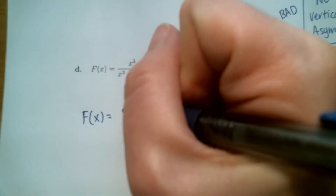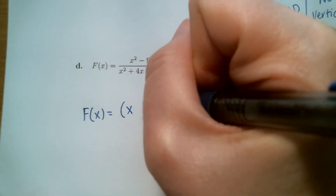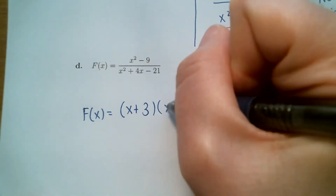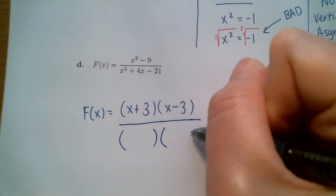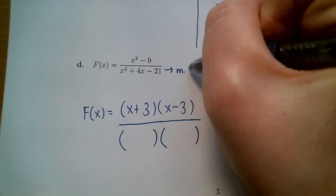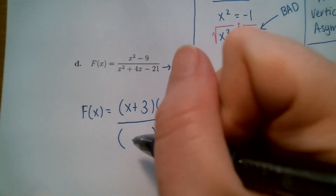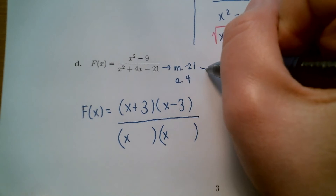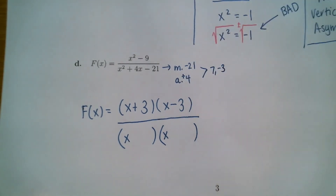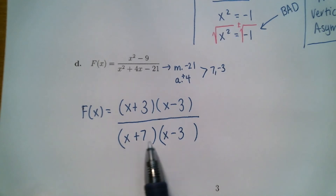The top is a difference of squares. The square root of x squared is x, the square root of 9 is 3, and the signs are one of each. The bottom should factor — you want two numbers that multiply to be negative 21 and add up to positive 4. This breaks down into x times x to get the x squared, and the two numbers are 7 and negative 3.